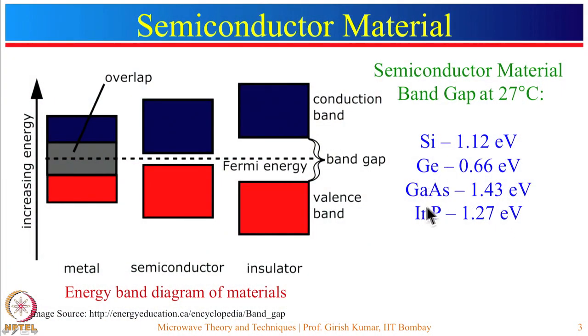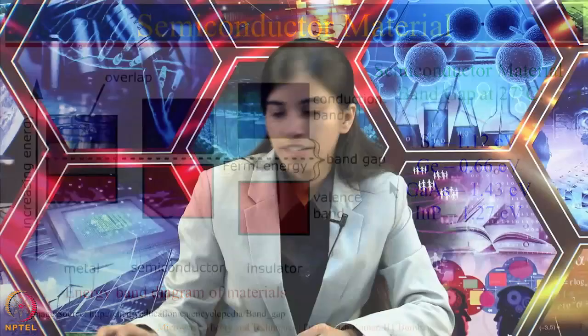Looking at gallium arsenide and indium phosphide — these are compound semiconductor materials with relatively higher energy gaps. They offer significant advantages over silicon and germanium, such as low noise figure, high power handling capability, and they can operate up to very high frequency ranges — possibly up to terahertz.